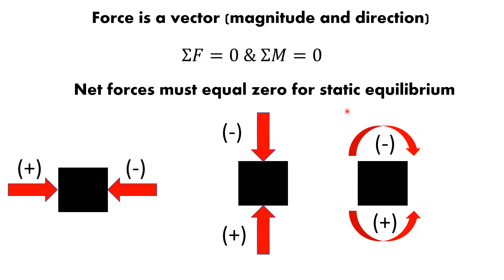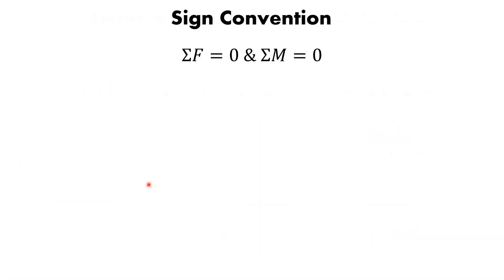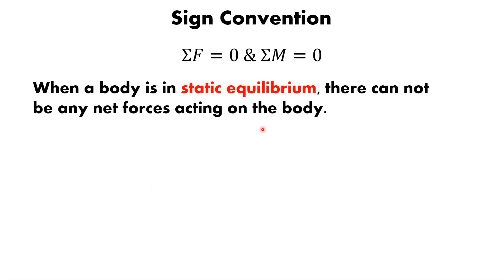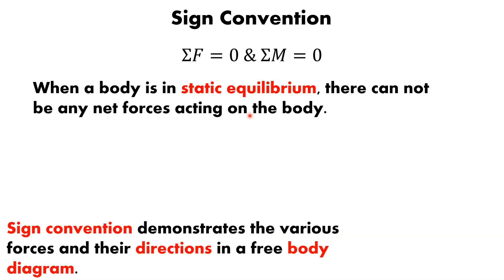The net force and net moment both come out to zero in static equilibrium. Forces have magnitude and direction, and we handle direction using a sign convention. Forces applied to an object must have a reaction force that's equal and opposite, and this sign convention demonstrates the various forces and their directions in your free body diagram.